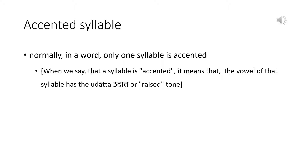Normally, in a word, only one syllable is accented. There are a few exceptions to this rule where two syllables in a word are accented. When I say that a syllable is accented, I mean that the syllable has the udātta or raised tone. In a syllable, it is the vowel that has the accent.